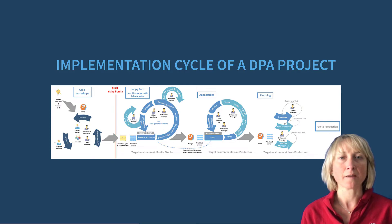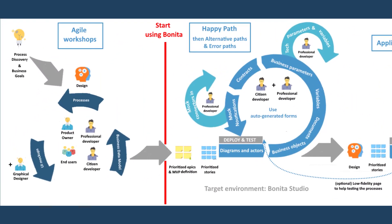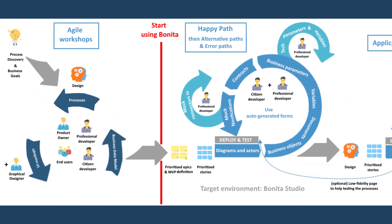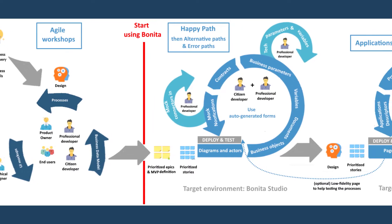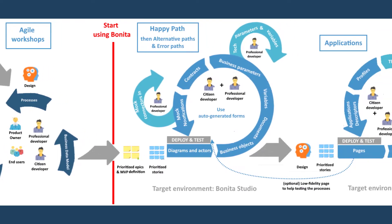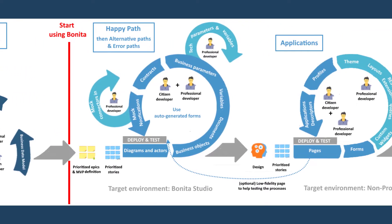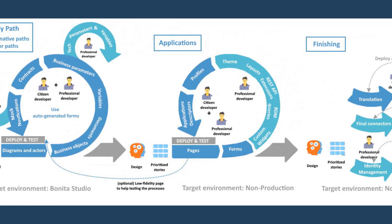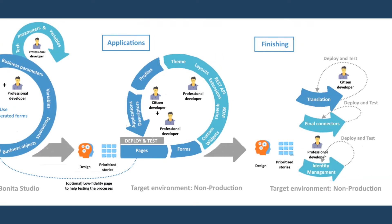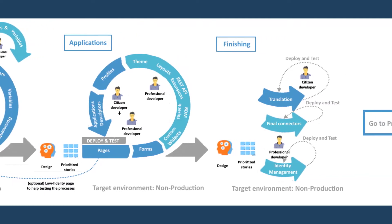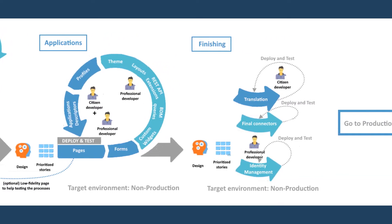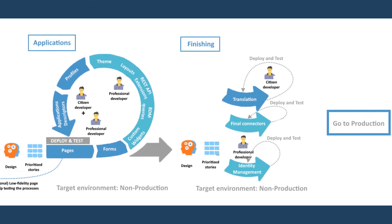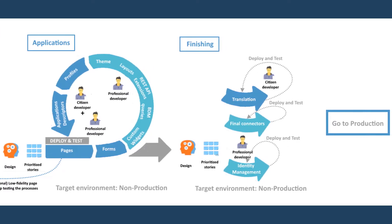A DPA project aims at automating and optimizing business processes, which means that what you are going to implement has a direct impact on users. That's why it is important to proceed with iterations and work in collaboration with the business teams during the whole project. Each iteration will enrich the processes, data, stakeholders, and then the applications, and needs to be tested by key end users.